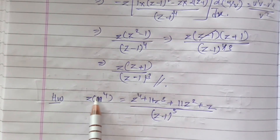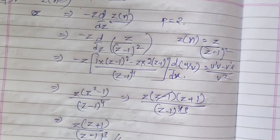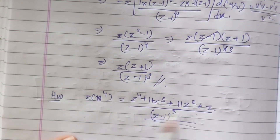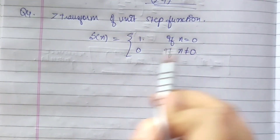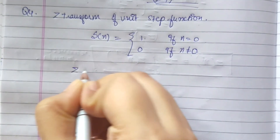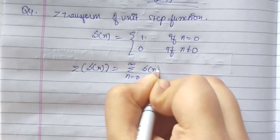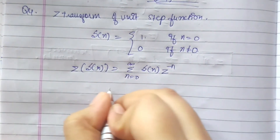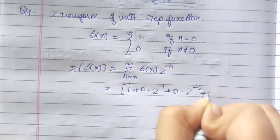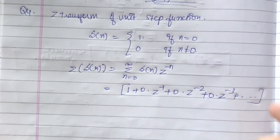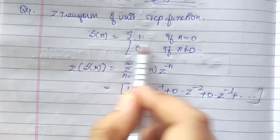You can try to solve Z{n^4} as a practice problem using the same recurrence formula method. Now let's solve a question based on the unit step function. The unit step function equals 1 when n=0 and 0 otherwise. So Z{unit step function} = summation from n=0 to infinity of u_s(n) * z^(-n) = 1 + 0 + 0 + 0 ... All terms after n=0 become zero, so the Z transform of the unit step function equals 1.